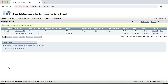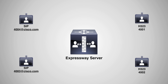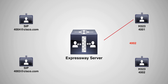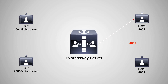Let's walk through the diagram. Endpoint 4001 wants to call 4002, so it sends an admission request to the Expressway. The call processing order is invoked and the first thing checked is transforms. There's a transform that says anything without a domain — add a domain. So 4002 becomes 4002@cisco.com. Then we get to the zone search, and the first search rule (priority 40) strips the domain, searching for just 4002. The Expressway finds a match and the call goes through.